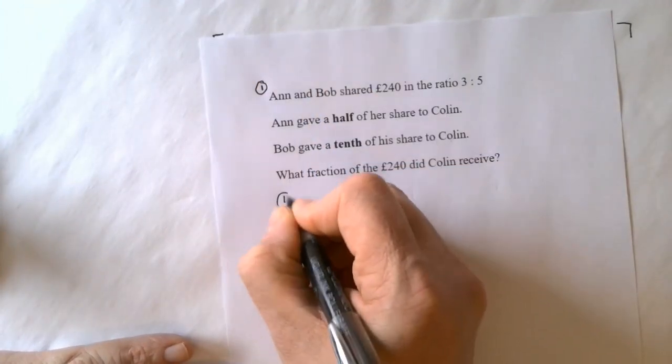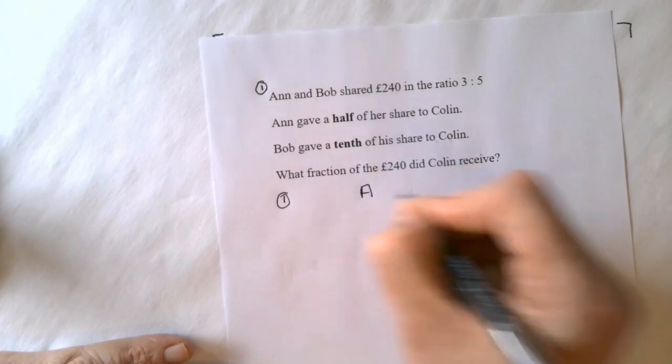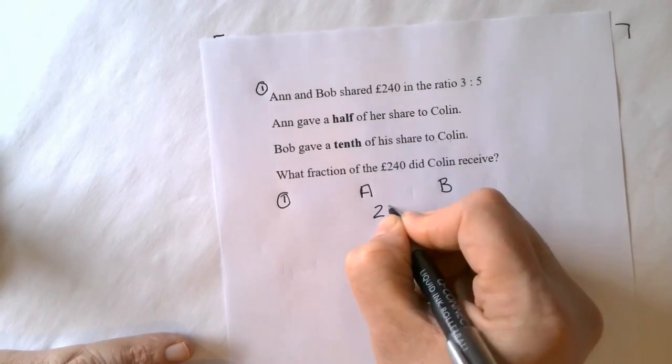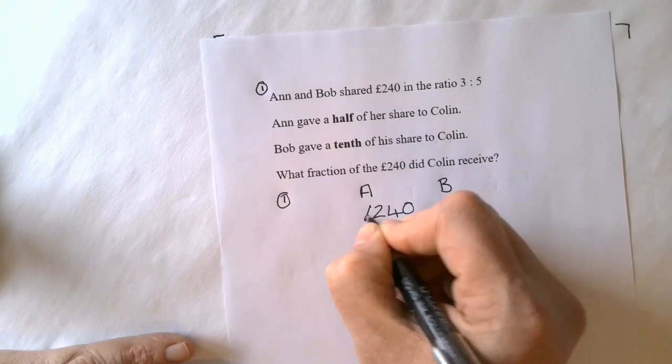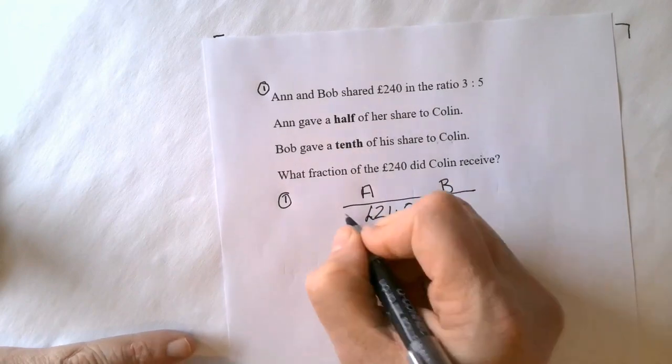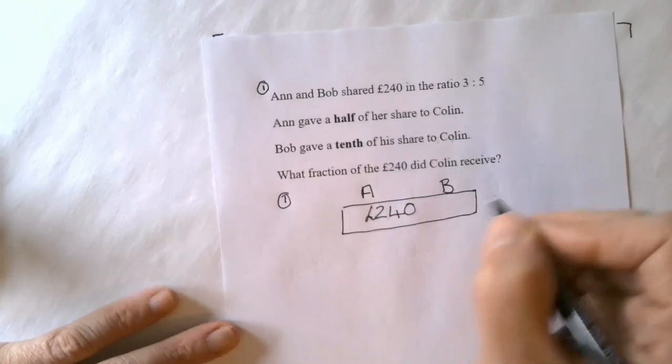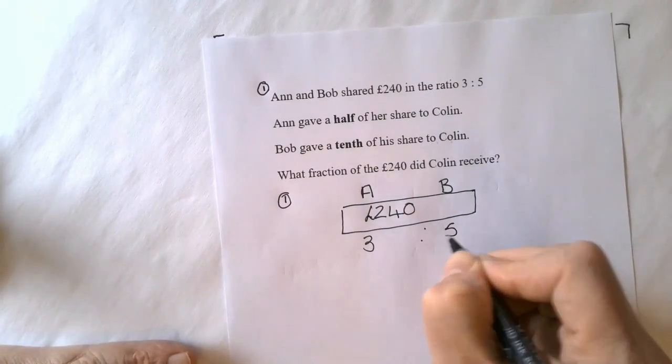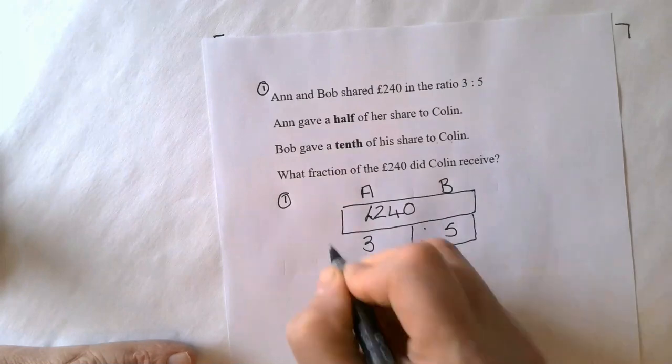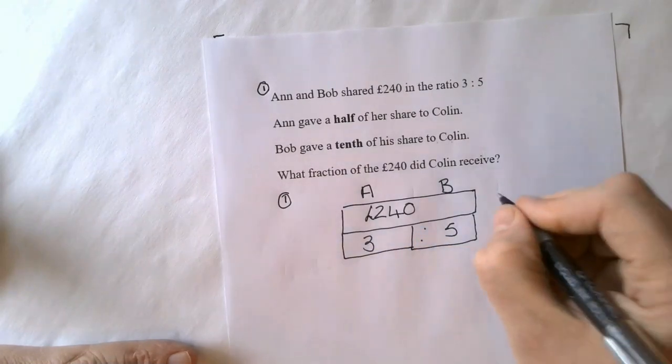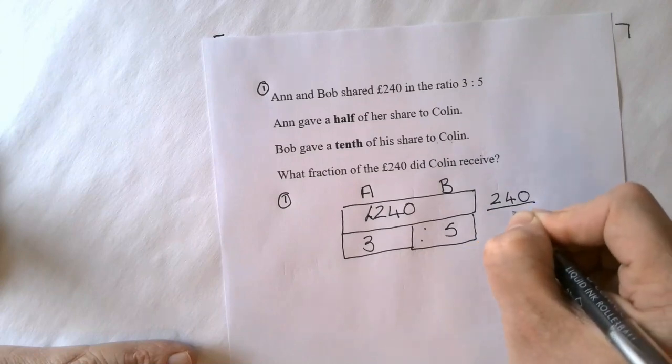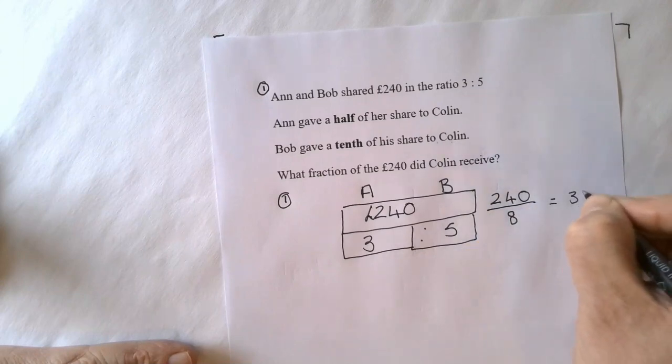If we start with this part first and think of this as the first part of the question. Part 1, same again, Ann and Bob, £240 in the ratio of 3 to 5. So 240 divided by all parts in the ratio which is 8 will give you 30 pounds.